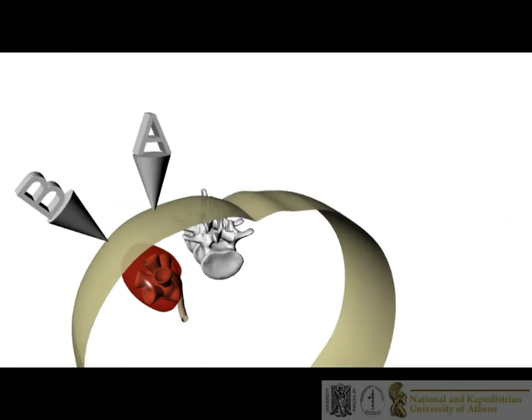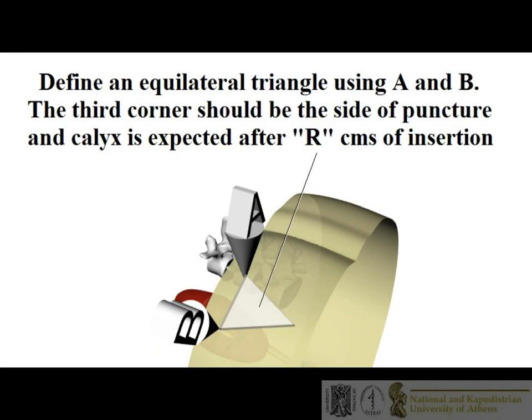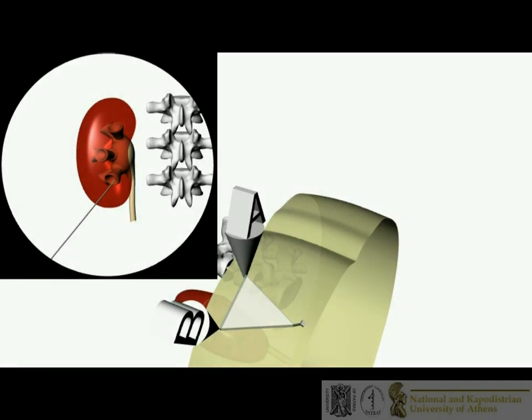Coming back to the patient's body, an equilateral triangle using points A and B is designed, with the third corner being the site of needle puncture. A puncture targeting the center of a hypothetical sphere — where the puncture point and points A and B belong to its surface — is expected to meet the target calyx after a penetration equal to the pre-calculated radius.